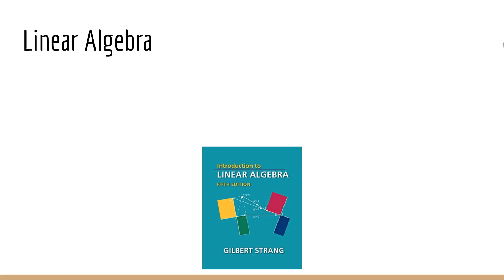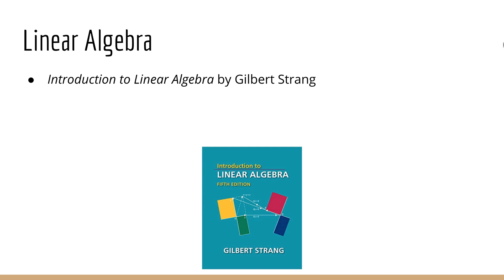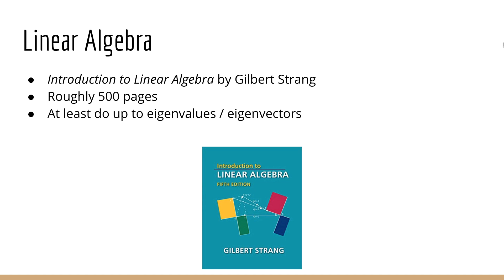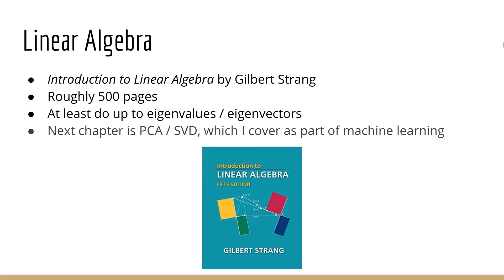For linear algebra, I recommend the book Introduction to Linear Algebra by Gilbert Strang, who is a famous linear algebra instructor from MIT. For this book, unlike calculus, you will want to go through every chapter. Luckily, this book isn't 1,000 pages long — it's about half that. However, if that's still too much, you will at least want to do the first half of the book, which goes up to eigenvalues and eigenvectors. The next chapter is on principal components analysis and singular value decomposition, which I actually cover in my courses, so there's some crossover between this book and actual machine learning.